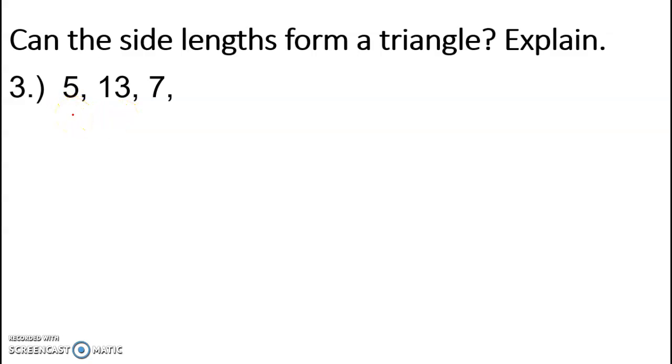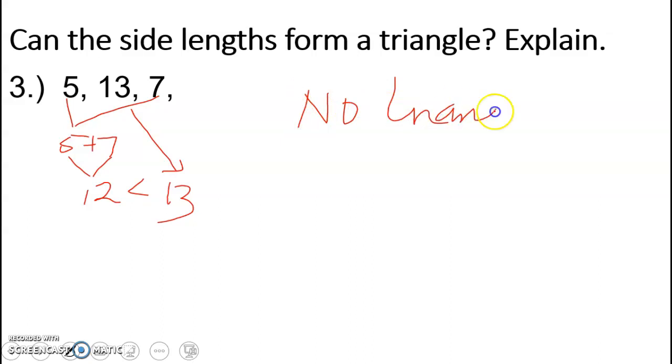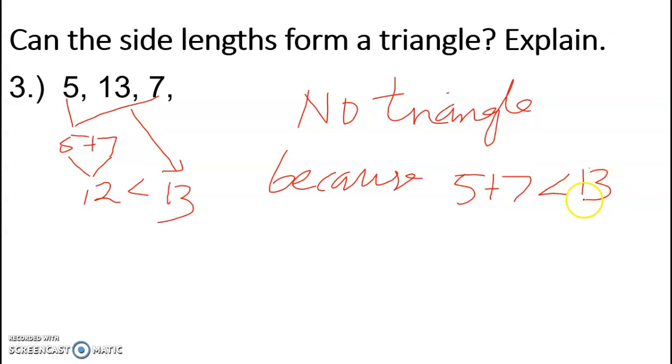So 5 plus 7 is 12, and we see 12 is less than 13. But 12 is supposed to be, the sum has to be greater. Since 12 is less than 13, that means no triangle. No triangle because, it says explain, you're going to say because 5 plus 7 is less than 13. That's the explanation. Because we added them, the sum is less.